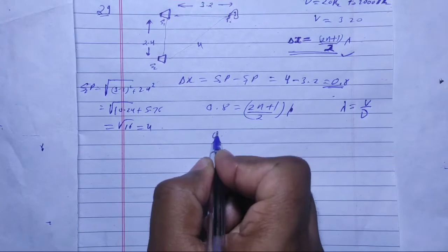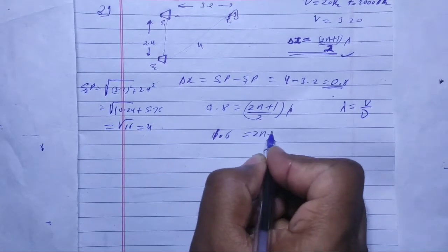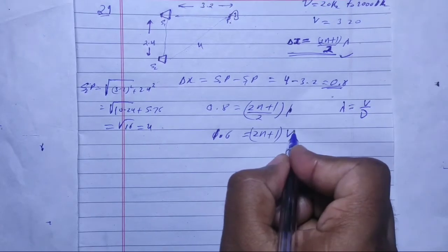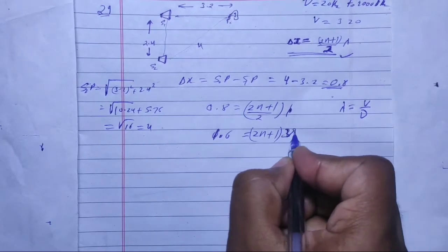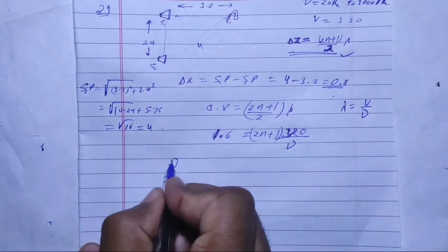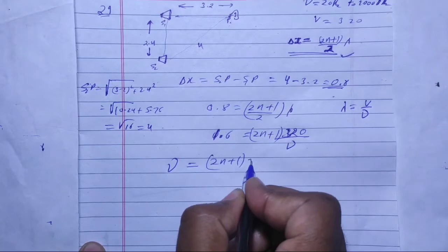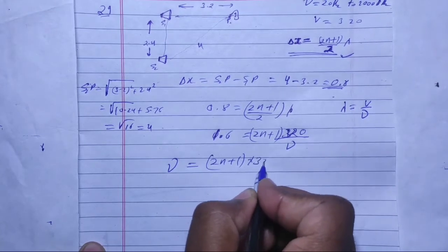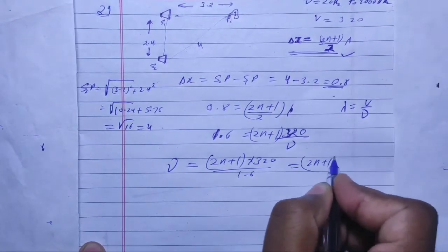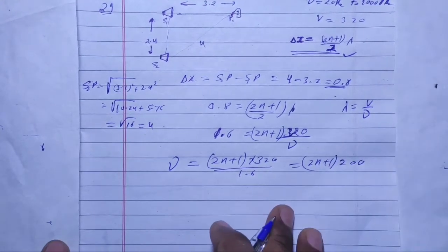Substituting, we multiply both sides by 1.6, giving 1.6 = (2n+1) × λ. Speed is 320 m/s, so frequency = (2n+1) × 320 / 1.6, which gives frequency = (2n+1) × 200 Hz.